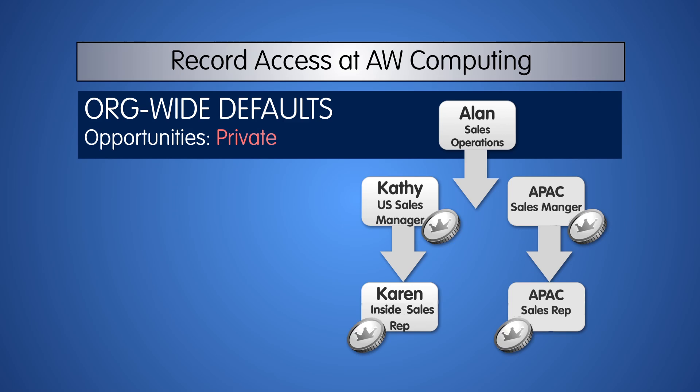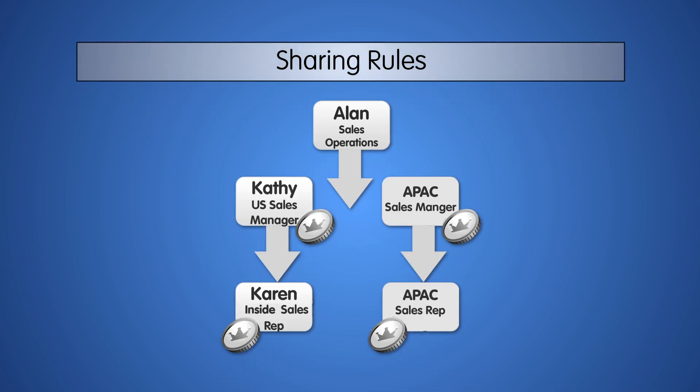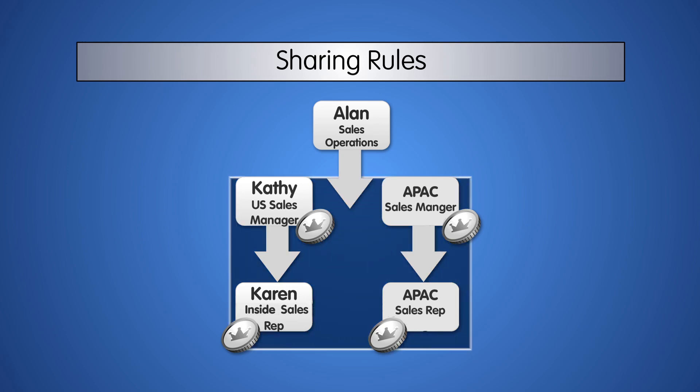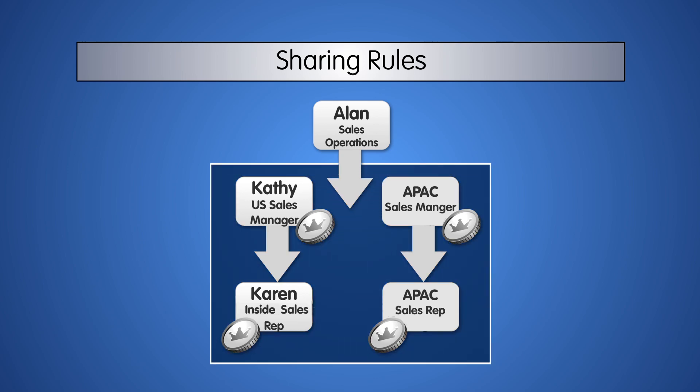AW has grown and has added another sales team for the Asia-Pacific region. Sales Ops still sees all opportunities, U.S. Sales Managers see their team's opportunities, and APAC Managers see their team's opportunities. So the role hierarchy allowed us to open record access up vertically. However, we need a way to extend record access horizontally so that the U.S. Sales Manager role can see records owned by the users in the APAC roles, and the APAC Managers can see records owned by users in the U.S. roles.